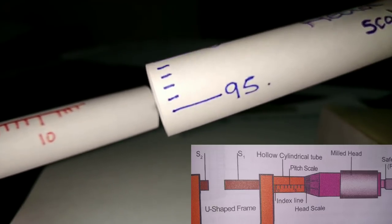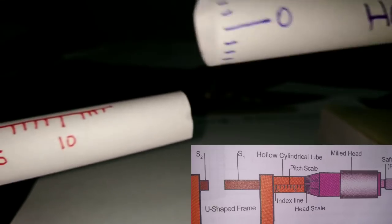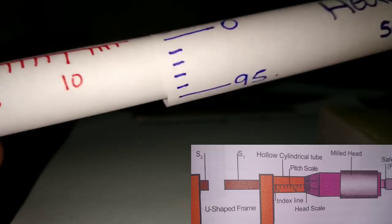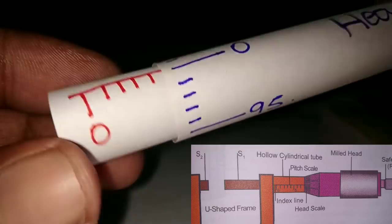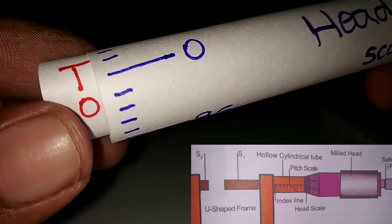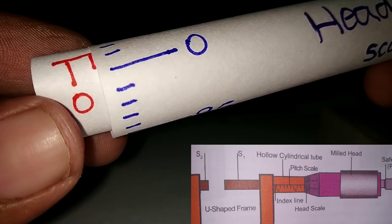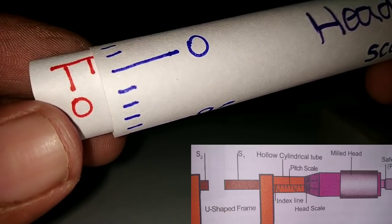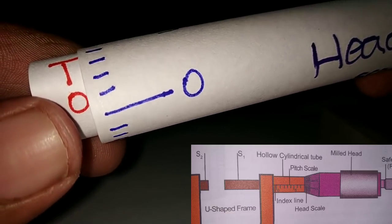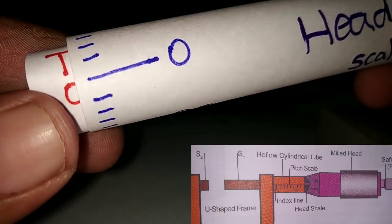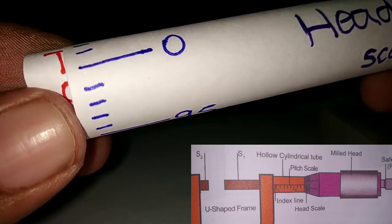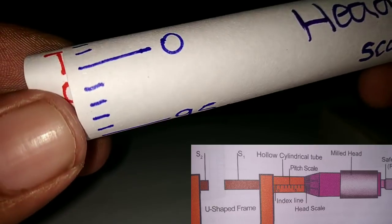If you look at the overall, it's like 100 divisions. If you look at the head scale, it's like the pitch scale. Now, let's get an object. If you look at this, it's like 1mm. If you look at the head scale, it's like 0 to 6.